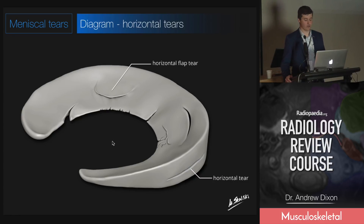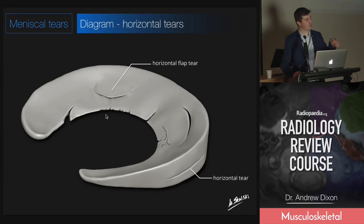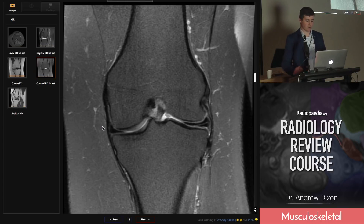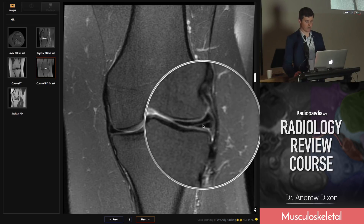Now we're going to go through the different orientations of tears. First, the horizontal tear, which cuts through in that axial plane. Most commonly a horizontal tear doesn't create a flap, but occasionally you get horizontal flap tears where there's an isolated little area that can flip around into unusual spots. Here we have a coronal image showing a classic horizontal tear.